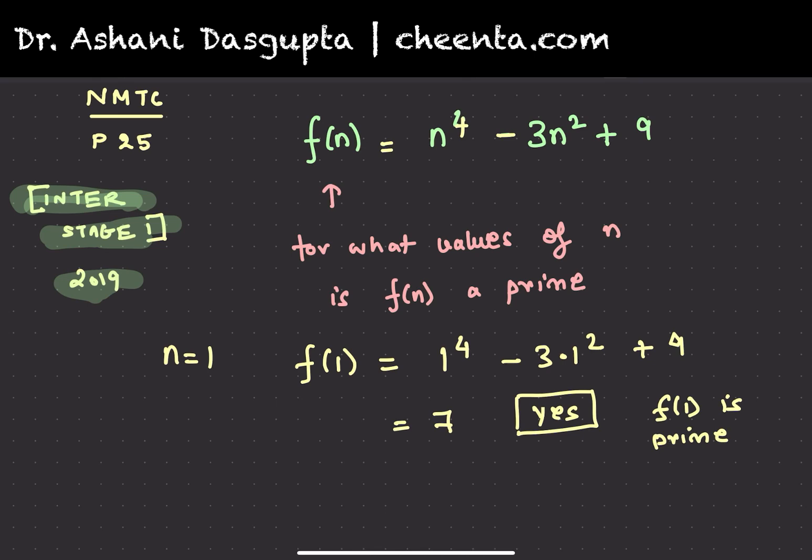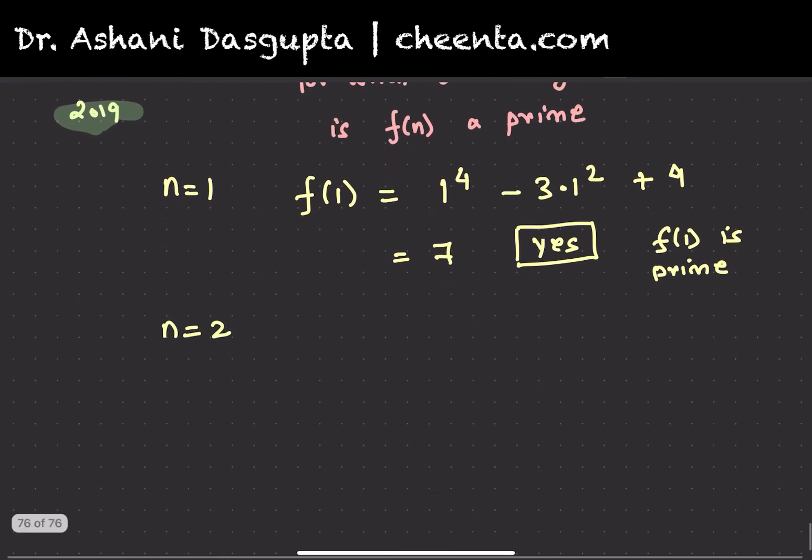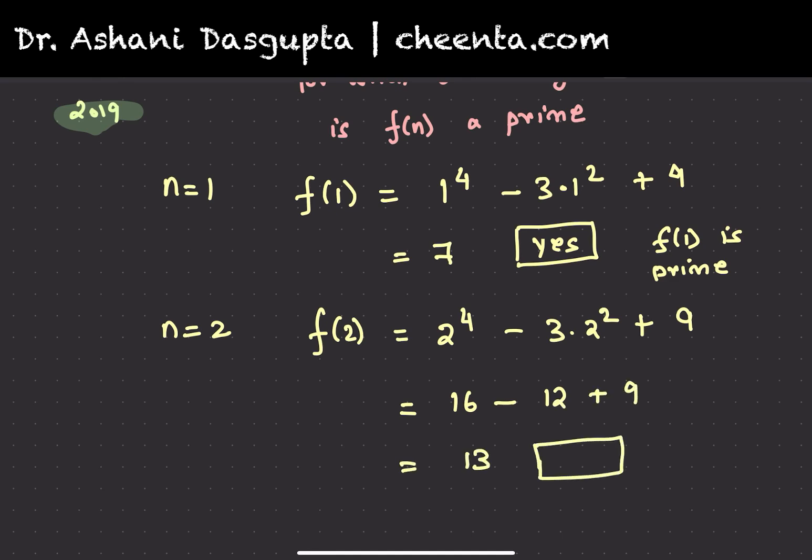Similarly, we can check for n = 2. f(2) = 2^4 - 3·2^2 + 9 = 16 - 12 + 9 = 13. Yes, f(2) is prime as well.